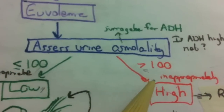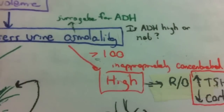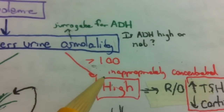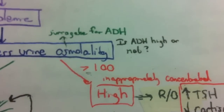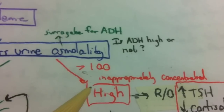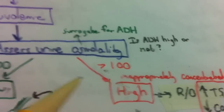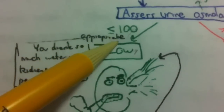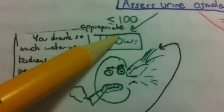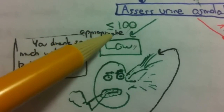Urine osmolality is a surrogate for ADH. We have two options: less than 100 or more than 100. If it's greater than 100, ADH is high; if it's less than 100, ADH is low.